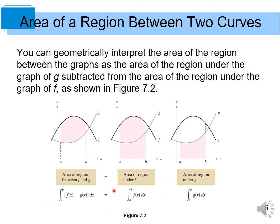So, in mathematical notation, it can be written as: the integral of f minus g with respect to x from a to b is equal to the integral of f with respect to x from a to b, minus the integral of g(x) with respect to x from a to b.